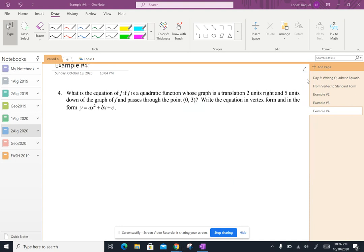Number four is asking us to find the equation of j if j is a quadratic equation where the graph is translated two units to the right and five units down from the graph of f.